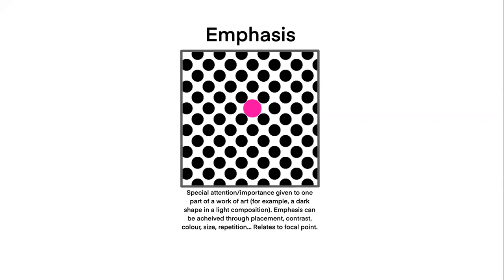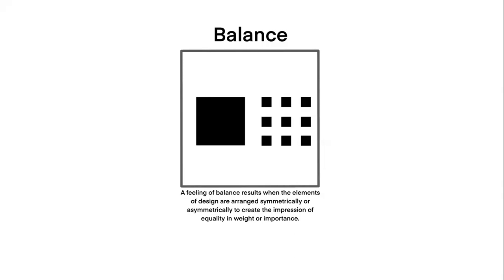Up next is balance. A feeling of balance results when the elements of design are arranged symmetrically or asymmetrically to create the impression of equality in weight or importance. So for example here, even though we have a square that's bigger than all the other squares, it feels like this composition is balanced.